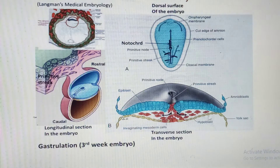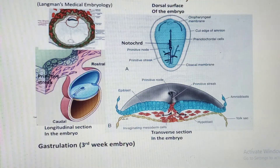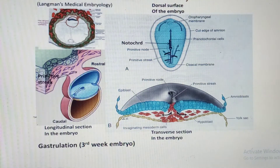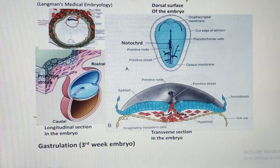To summarize germ layer formation: the primitive streak first gives rise to endoderm by displacing hypoblast cells; then a second wave of cells from the streak lies on top of the endoderm to form the mesoderm; and finally a third group of cells from the streak forms the ectoderm. All three definitive germ layers are therefore derived from the primitive streak.